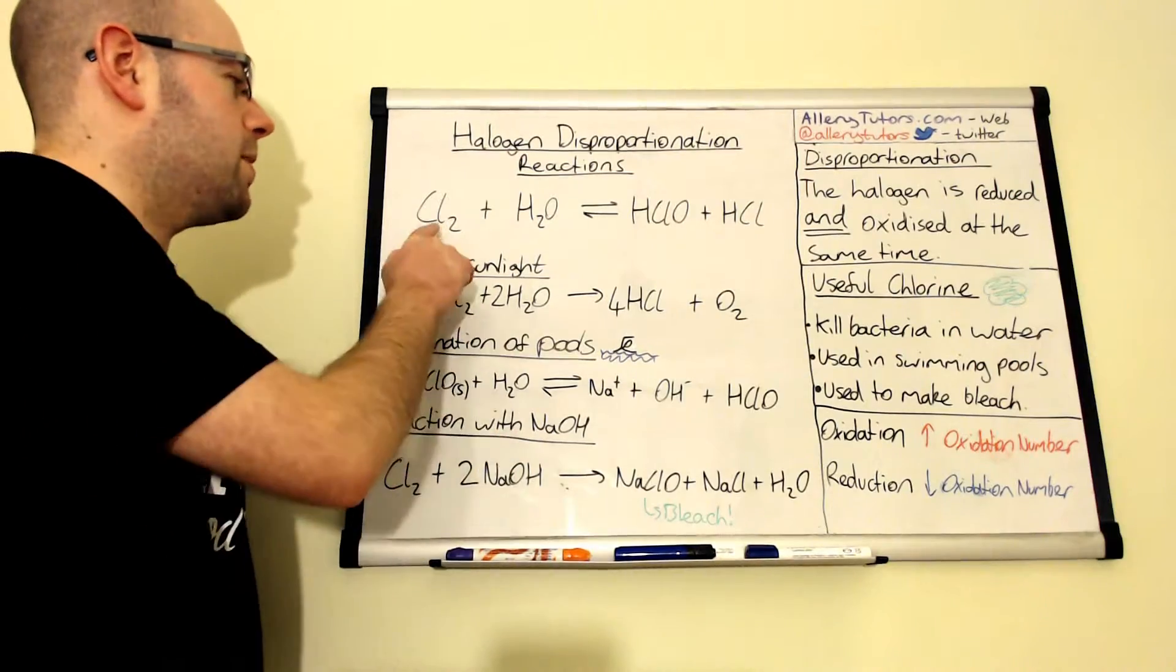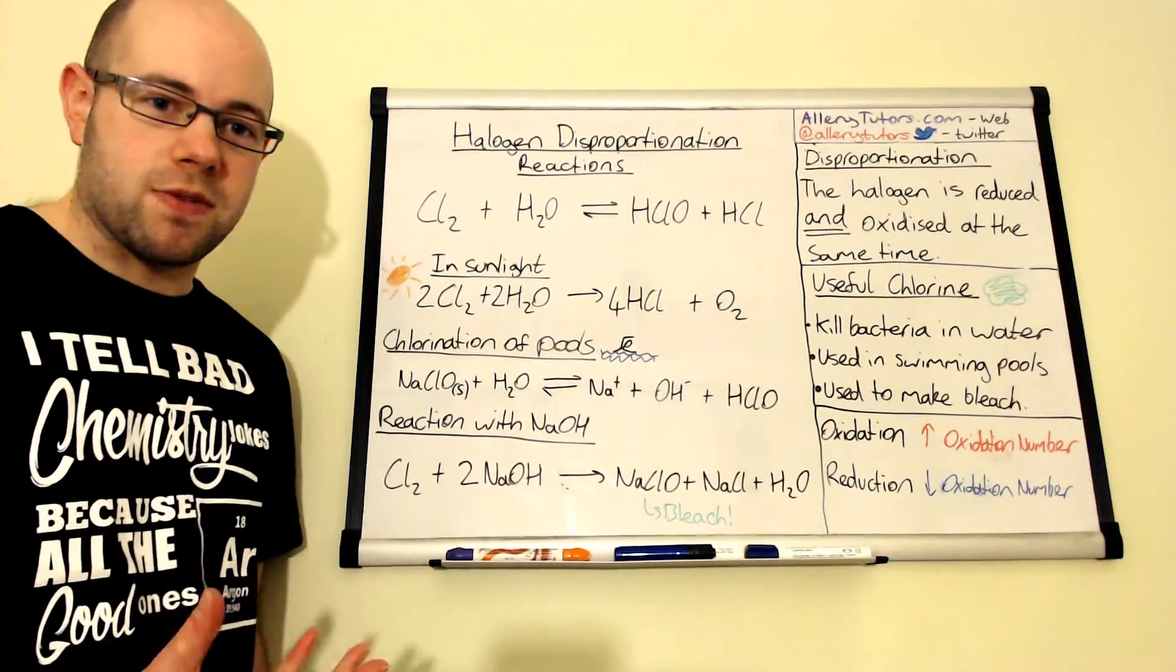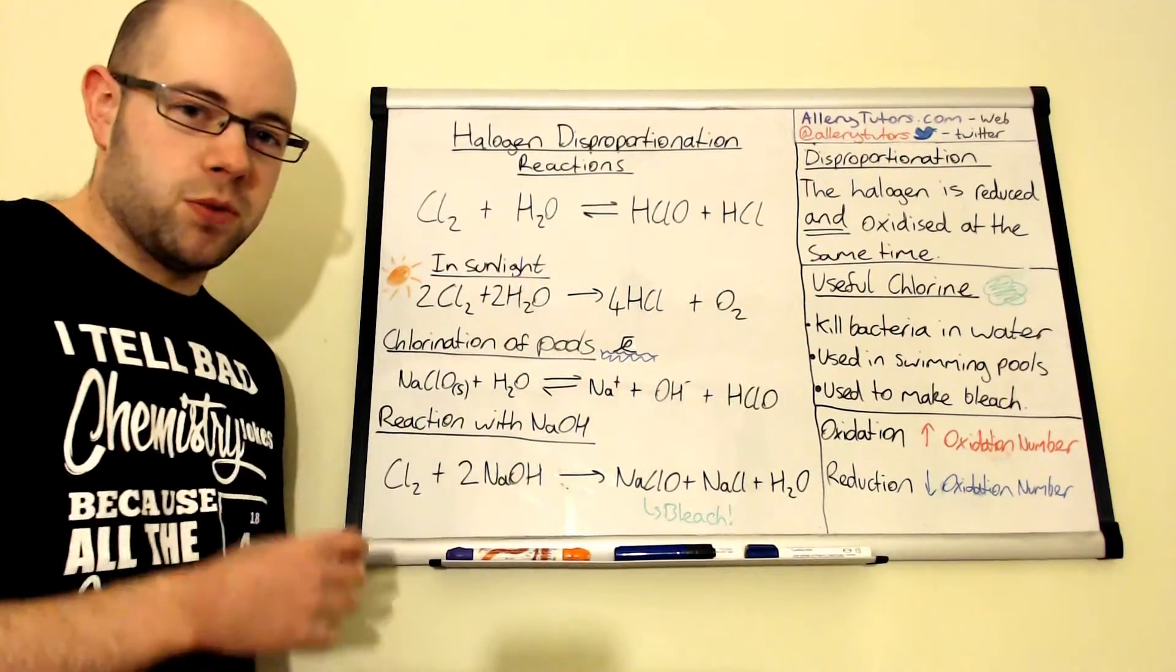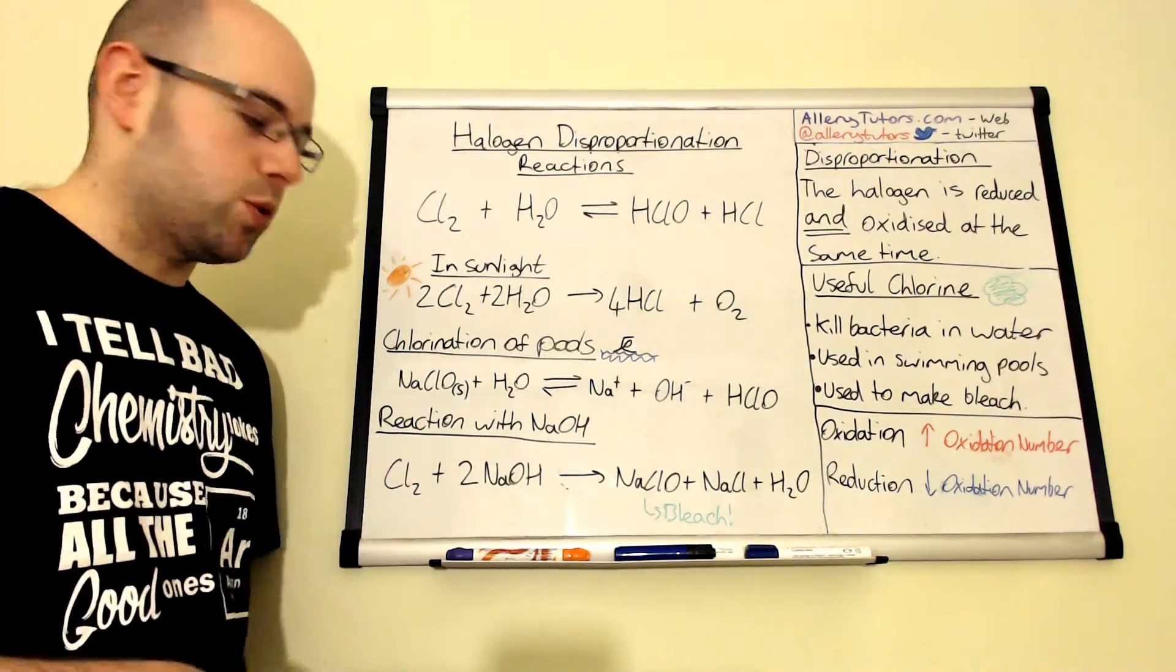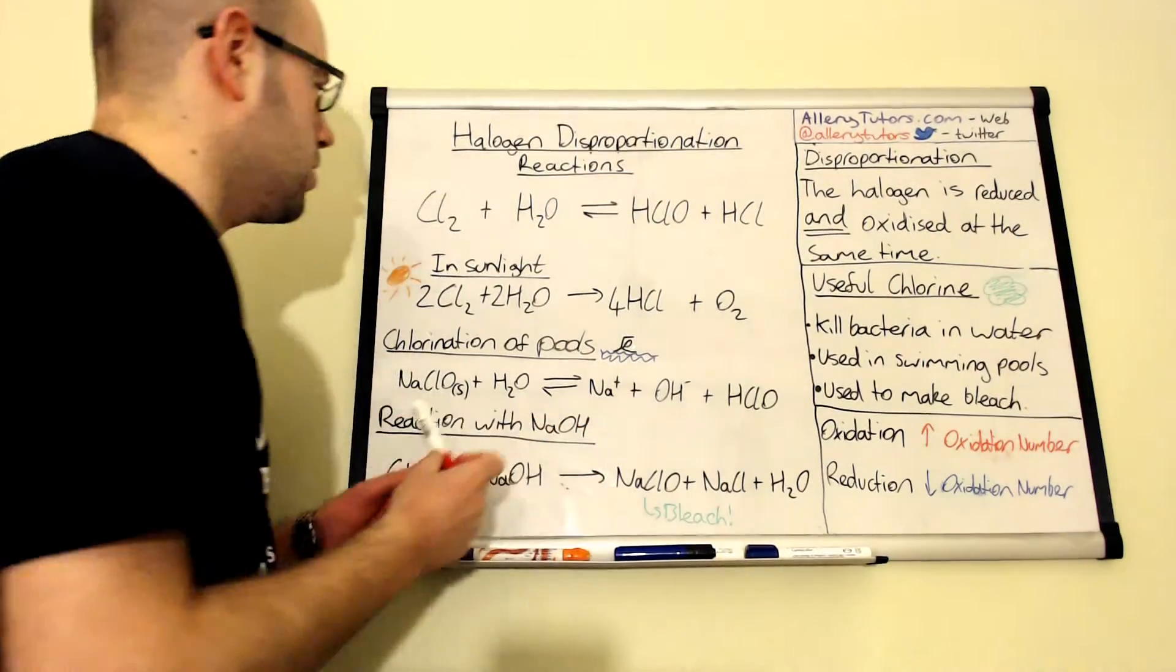We're going to start with this reaction here. This is a reaction where we take chlorine and add it to water, so we're going to push it through water. This reaction does undergo a disproportionation reaction and I'm going to show you why.